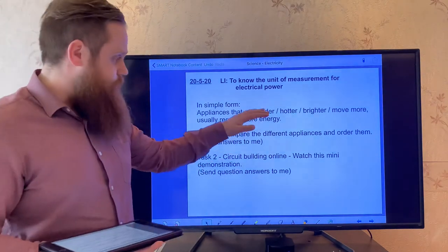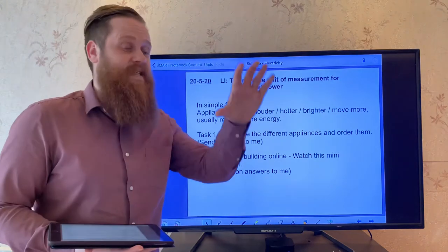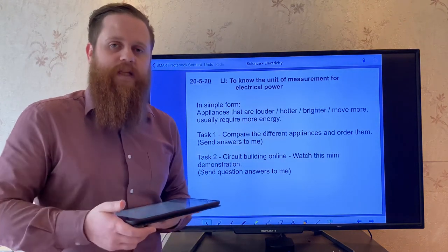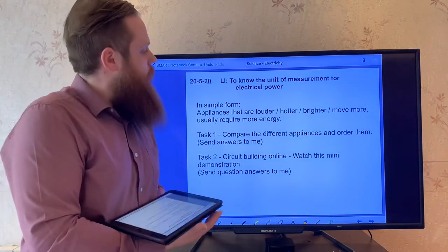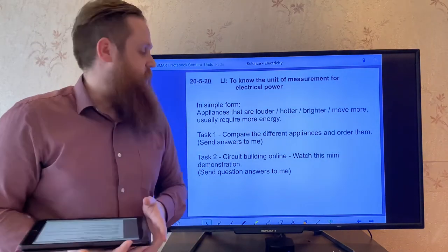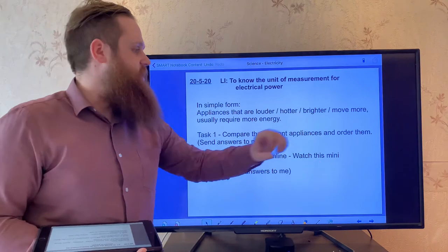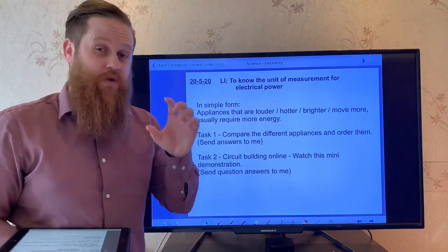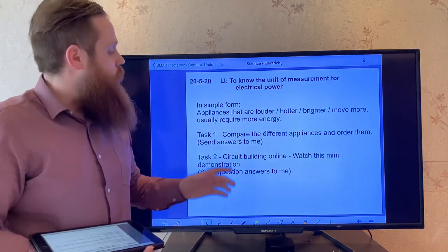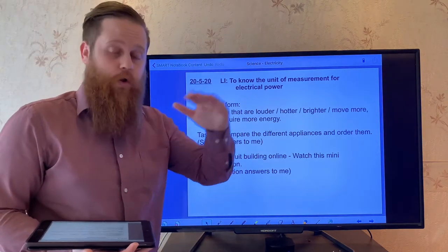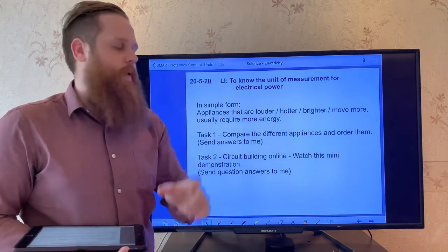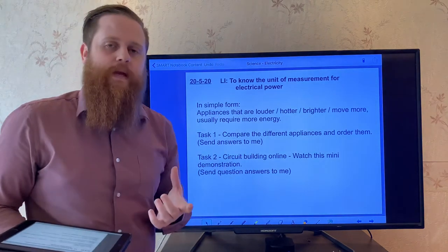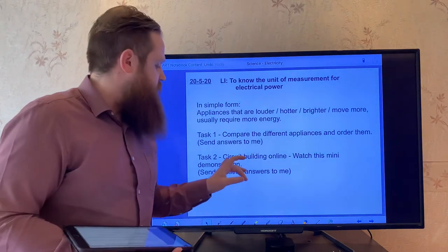So you're going to be comparing different appliances around your house and ordering them into what you think uses sort of 10 watts all the way up to the thousands. That's your first task today. So task one is to compare different appliances and order them into what you think uses the least amount of watts to the most amount of watts. You can cut it out and stick it in order, or very simply, you could write down the number and the appliance next to it. You need to send your answers to me. When you've done that, you can then move on to task two.